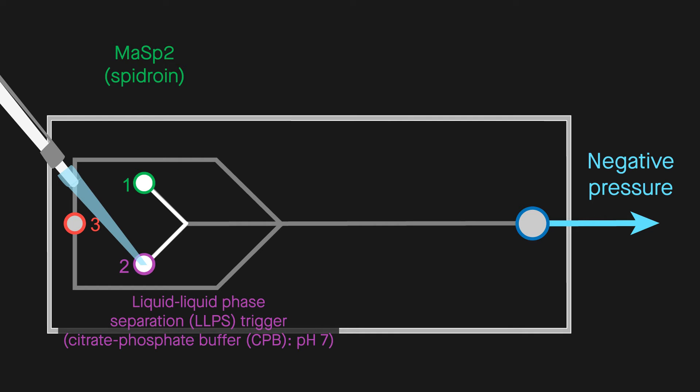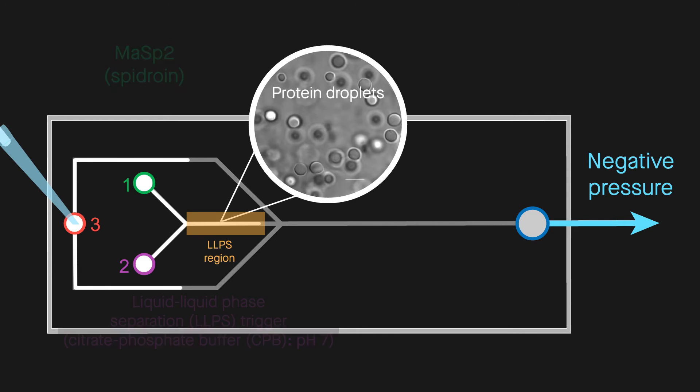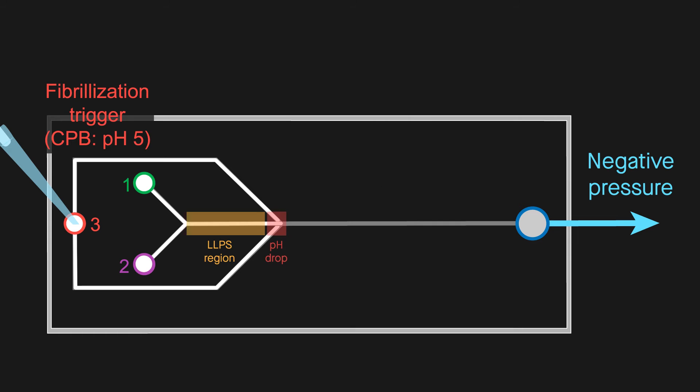It then mixes with a buffer to trigger liquid-liquid phase separation, creating protein droplets. The droplets then encounter a drop in pH, which triggers nanofibril formation.